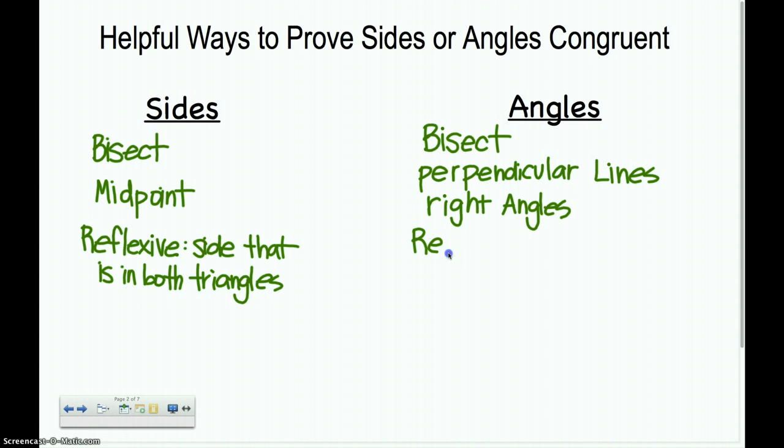That'll be especially important when you do HL because HL only works for right triangles. Reflexive. We want to be able to talk about angles that are in the same triangle, or in both triangles. If the same angle is in both triangles, we can use it as reflexive. If we have an angle in both triangles, obviously it'll be the same in both, and that's where that word reflexive comes in.